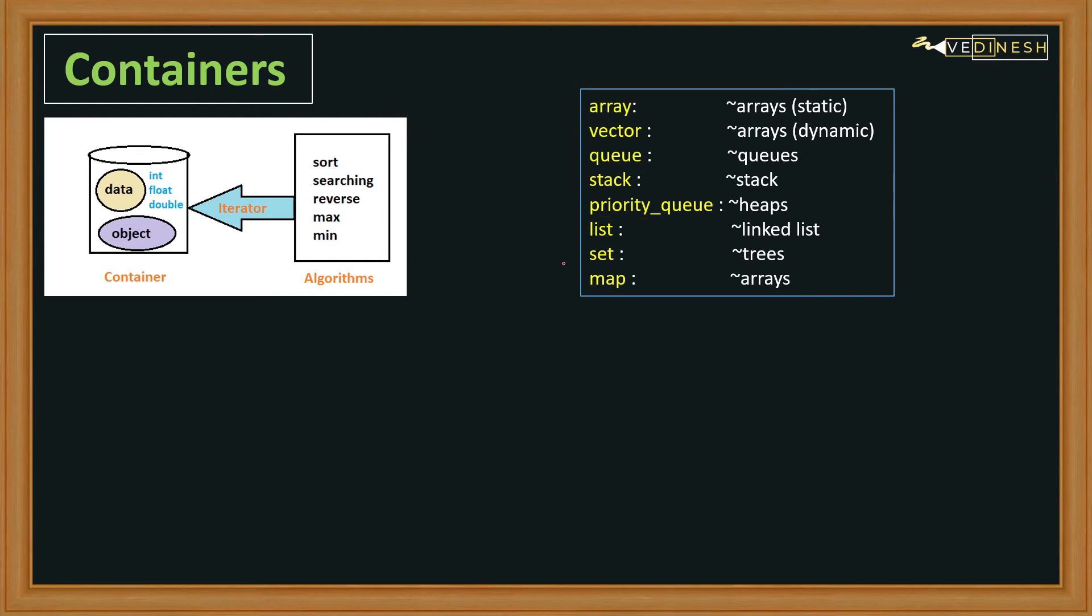Heap, which is called priority queue; linked list is called list; and trees are implemented with the help of sets. After that, a special type of container, which is map. We're going to learn a lot. Please note that if you're not familiar with these data structures, please watch my previous lecture on the basics of data structures, where I've given a high-level overview of all these data structures, and it will be pretty easy for you to understand these STL containers.